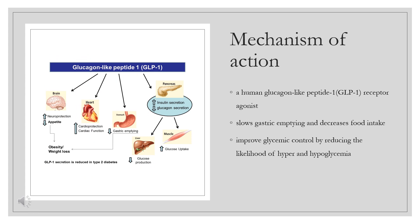Mechanism of Action. Dulaglutide activates the GLP-1 receptor found in pancreatic beta cells, increasing intracellular cyclic AMP (cAMP) in beta cells, leading to insulin release and subsequent reduction of blood glucose concentrations. Additionally, dulaglutide decreases glucagon secretion and slows gastric emptying.